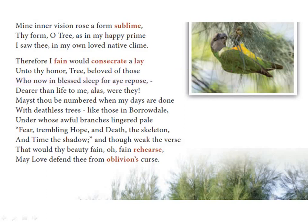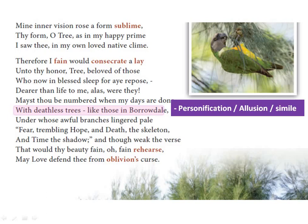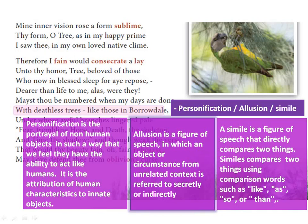The line 'with deathless trees like those in Borrowdale' again personifies the tree — that the tree will be remembered like other favoured trees, just as she remembers the people in her life. She mentions Borrowdale, which is a reference to Wordsworth's poem 'Yew Trees,' another poem praising trees like those in Borrowdale. The figure of speech used here is allusion — a figure of speech in which an object or circumstance from an unrelated context is referred to indirectly. The poet alludes to the yew trees that William Wordsworth wrote about and immortalised, so even if those trees were to die, they would live on for anyone who read his poems. Since comparison is made using 'like,' the figure of speech is also simile.